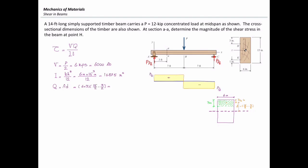The last parameter to determine is T, the thickness of the section at the cut. I will use a blue dashed line to show that. The dashed line shows the thickness of the cut section, which is equal to 6 inches. So T equals 6 inches.